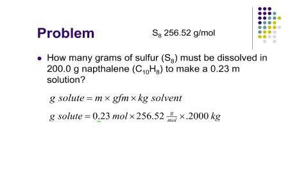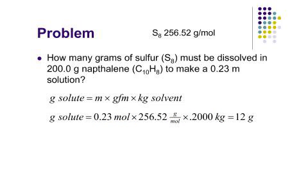Substituting in: 0.23 moles per kilogram times 256.52 grams per mole times 0.2000 kilograms. The unit of kilograms cancels out, the unit of moles cancels out, leaving units of grams — which is what we want to solve for, which is reassuring. Typing the numbers into the calculator gives an answer of 12 grams. Since the molality is only known to two sig figs, we can only report the answer to two sig figs. 12 grams is the correct answer.